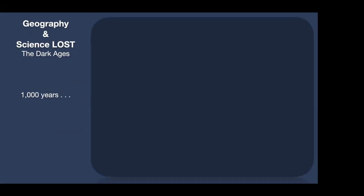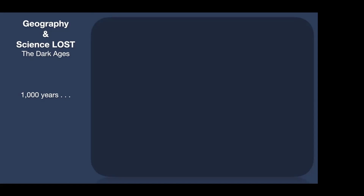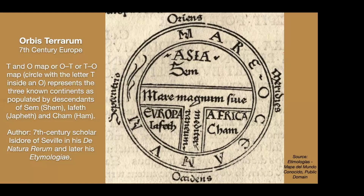However, all of that science was pretty much lost during the Dark Ages. A thousand years went by before we got back to some semblance of science related to the art of mapping. In seventh-century Europe, the Orbis Terrarum — called T and O maps — looks a lot like that Babylonian map. The T in the center literally separates the three known continents at the time: Asia, Europe, and Africa.